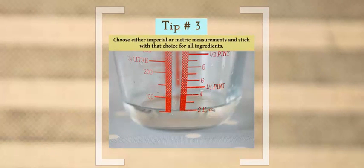Tip number three: choose either imperial or metric measurements and stick with that choice for all ingredients. Mixing the two in the same recipe will mean the ingredients aren't in the right proportions.